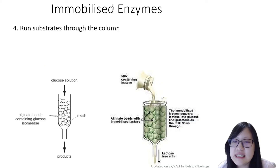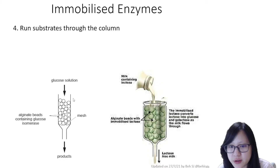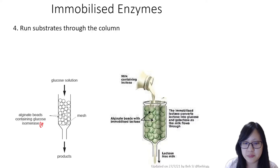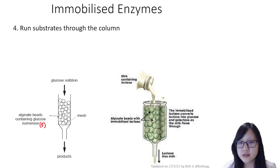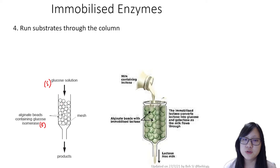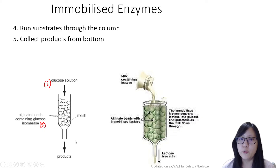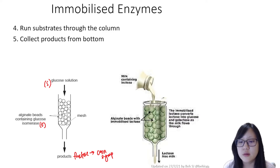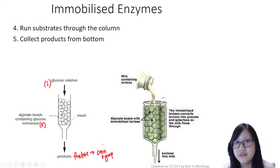We then run substrates through the column. For example, the enzyme is held in the alginate beads inside the column, and glucose solution — the substrate — is run through. The enzyme catalyzes the reaction, and the product comes out from the bottom. In this case, the product is fructose, and this process is actually used in the industrial production of high fructose corn syrup.